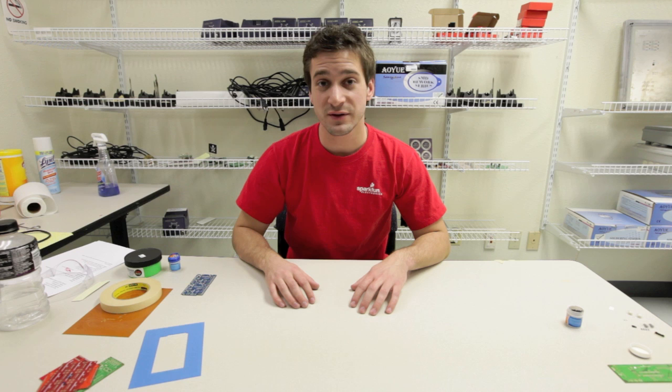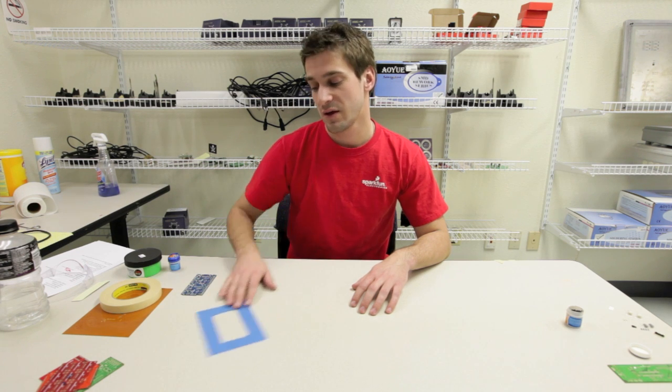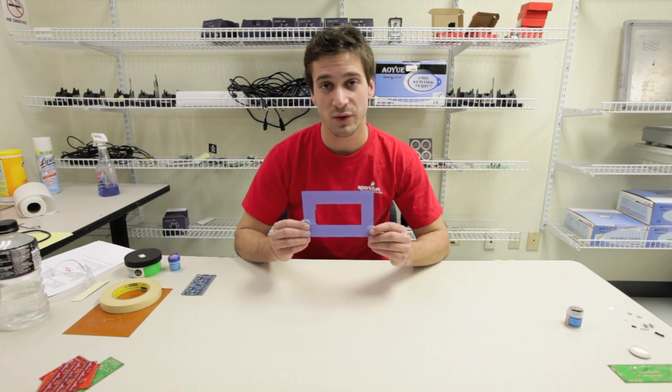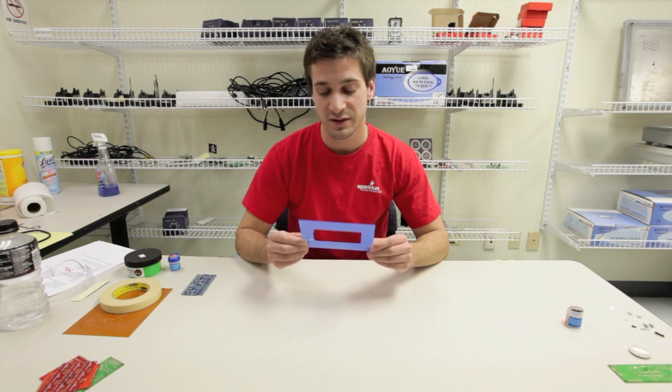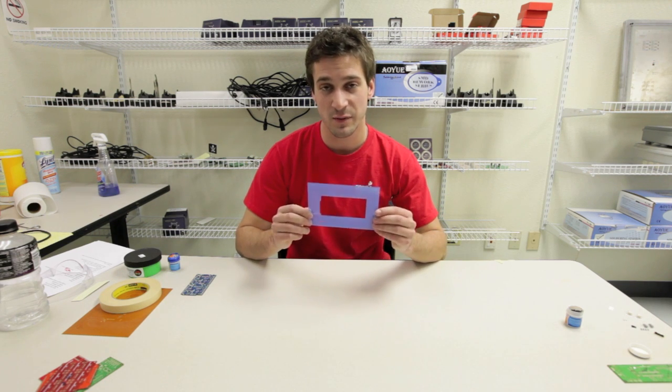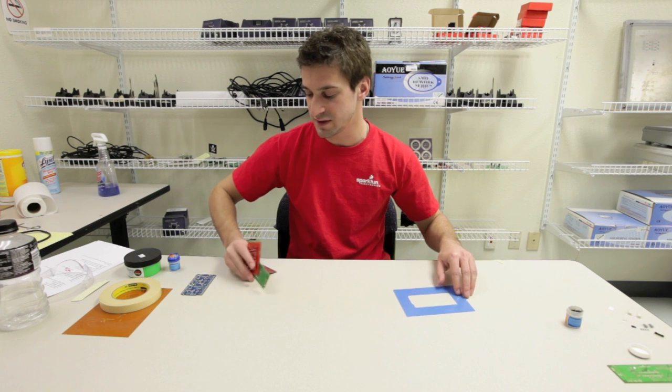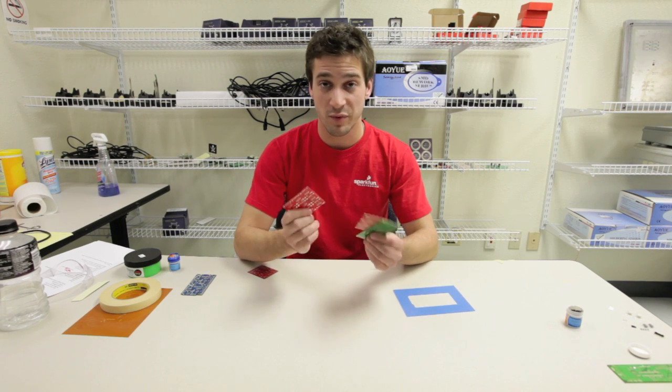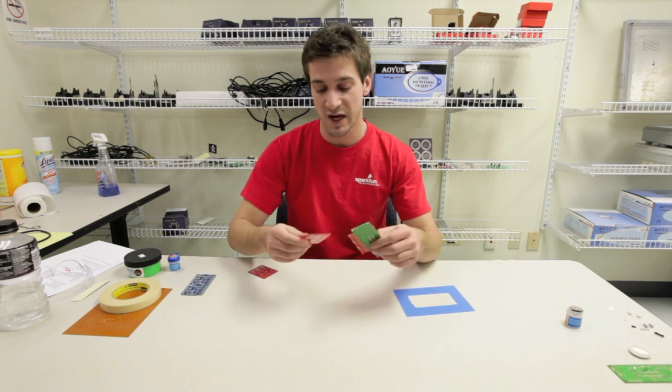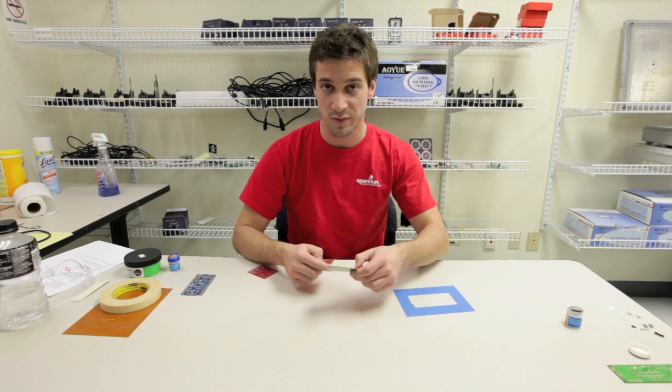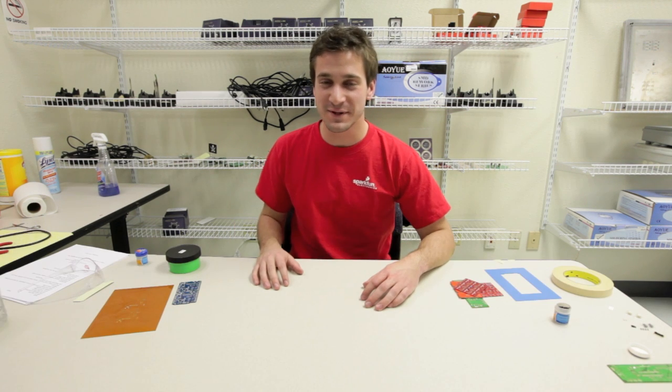So let's get into the materials needed for stenciling. First up, you will need some type of frame to hold the PCB steady while you're applying the paste. If you don't have a nice frame like this, you can use bare PCBs, junk PCBs from other projects, and you will just need to tape those in place around the PCB that you're stenciling.